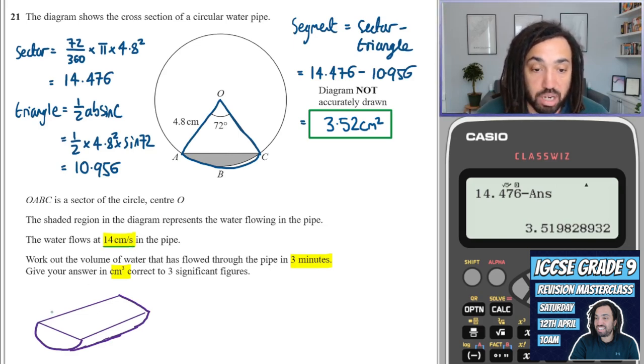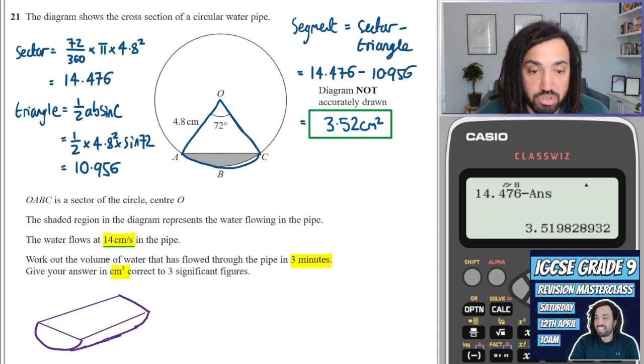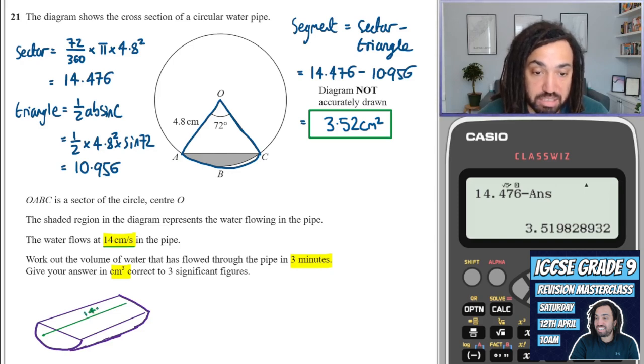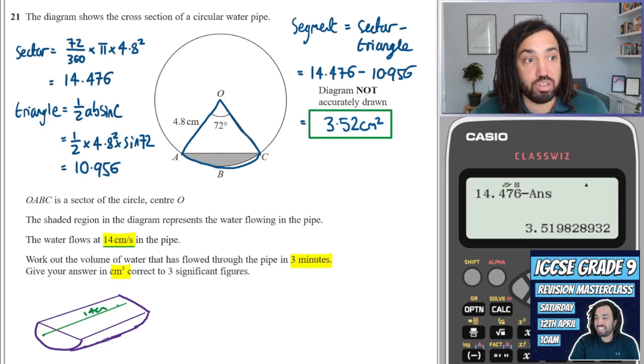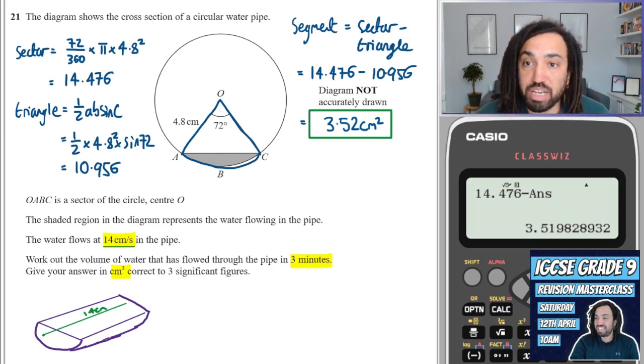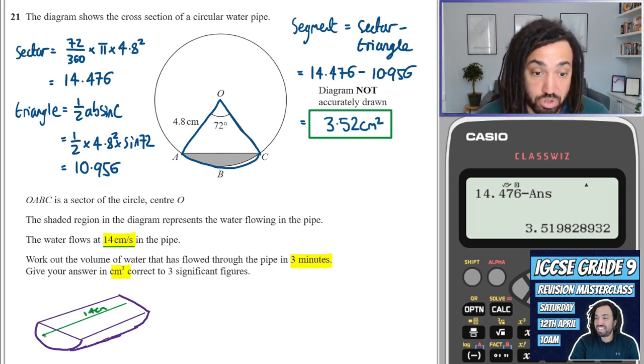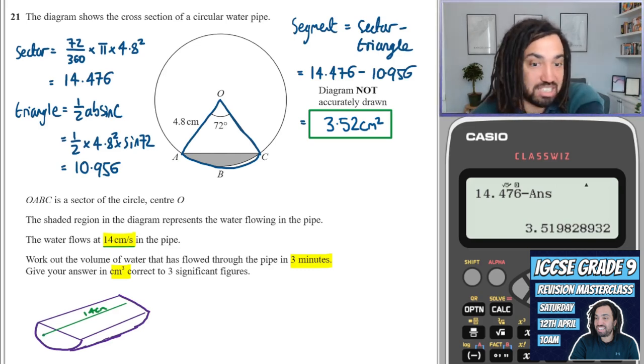And what it's telling us is that if we just look at one stream of the water, then it's going to travel 14 centimetres per second. So let's say we've got a little speck of water here. That's going to travel all the way down here. In one second, it's going to cover 14 centimetres. So we've got to think about what the volume is going to be per second.